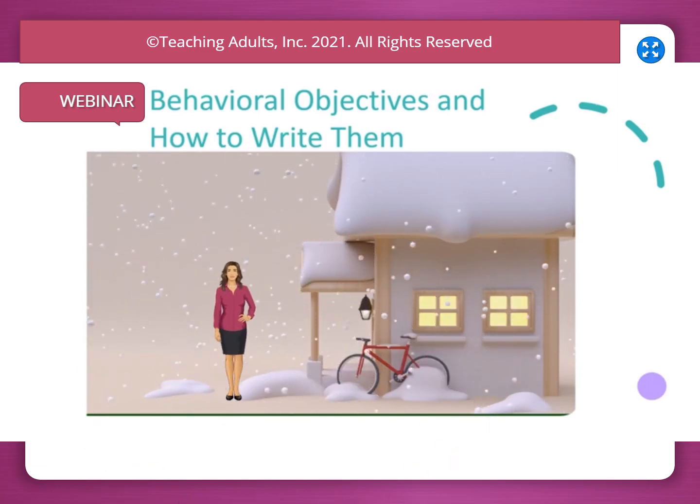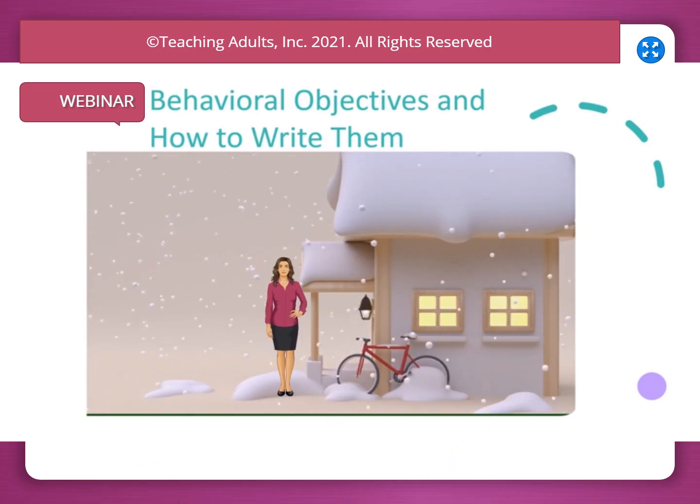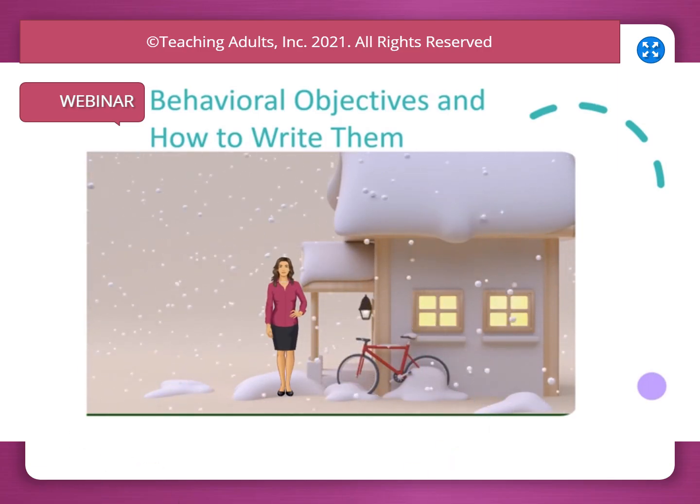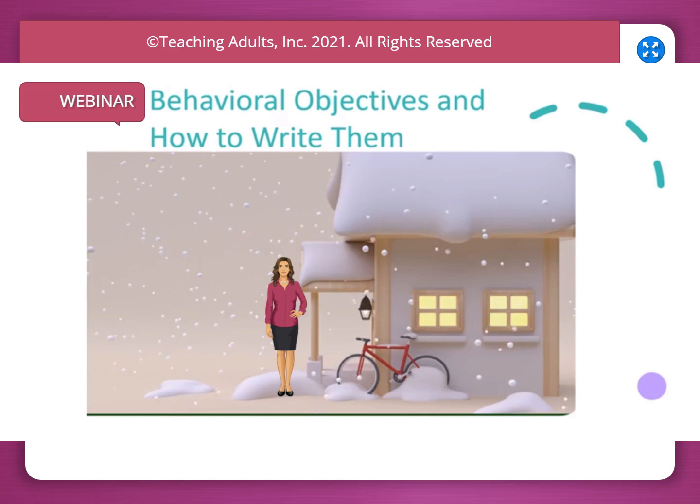Behavioral objectives and how to write them. Instruction is effective to the degree that it succeeds in changing students in desired directions and not in undesired directions.